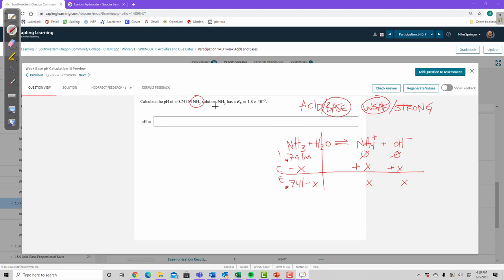Alright. Oh, another clue that this was a base. It gives me a KB instead of a KA. So KB is just a different K. Remember, we've been over this. It doesn't matter if it's KA or KB or KEQ or KC. They're all the same. They're products over reactants. Products NH4 plus OH minus over reactants, reactants NH3. Alright. NH4 plus is X. OH minus is X. And NH3 is 0.741 minus x. This is all equal to KB, which is 1.8 times 10 to the minus 5.